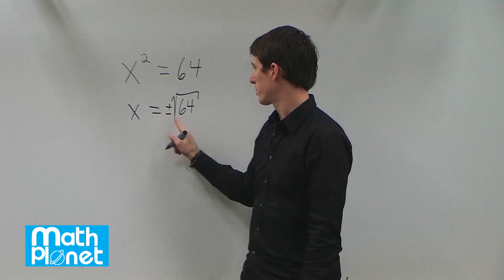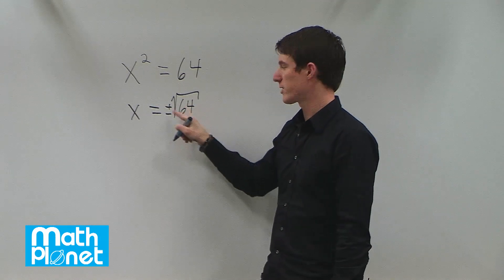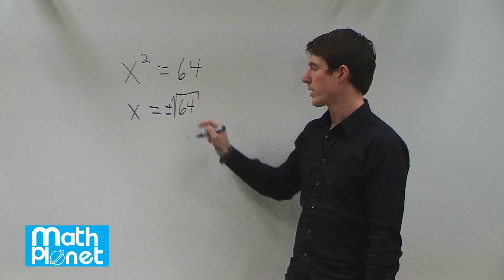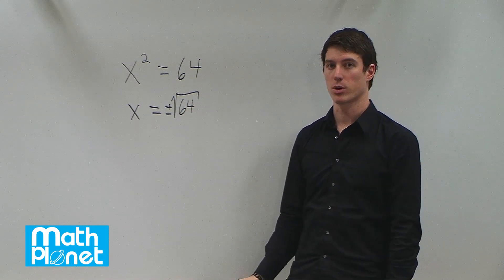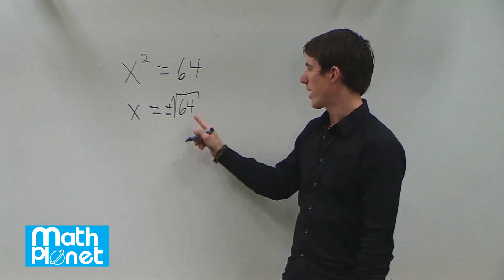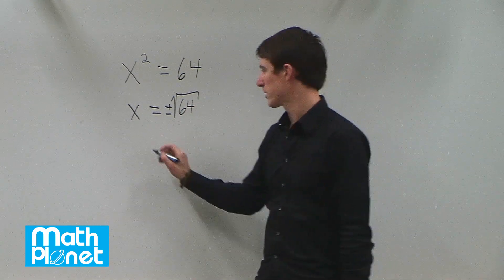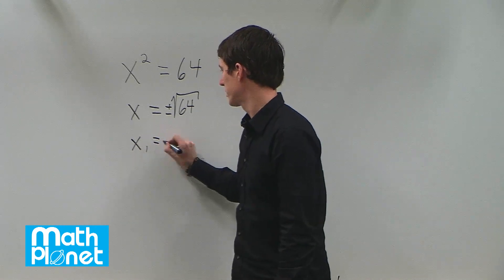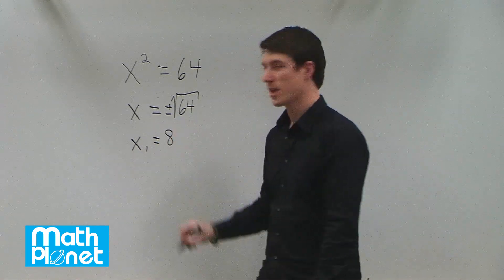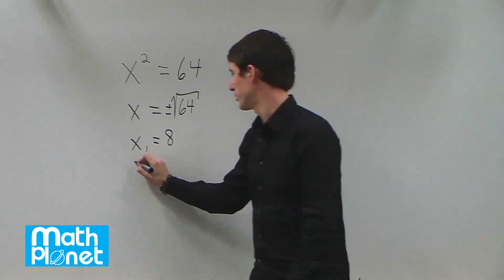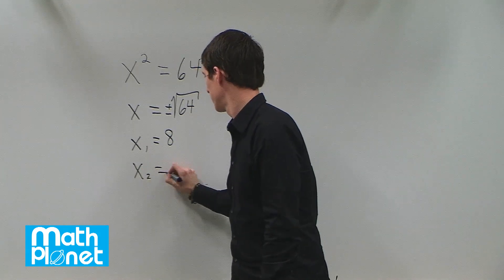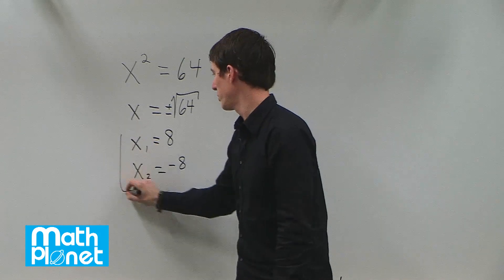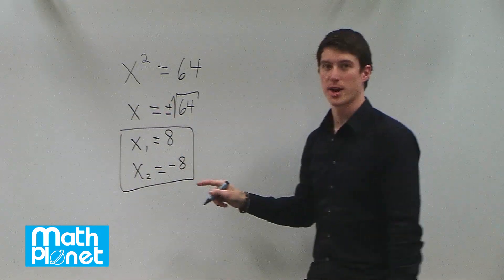So x becomes the positive value and the negative value. We just have to determine what number times itself is 64 — that would be 8, since 8 times 8 is 64. So we have two answers: x1 is positive 8 and x2 is negative 8. These are our two answers for this quadratic.